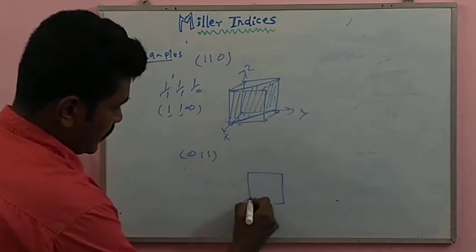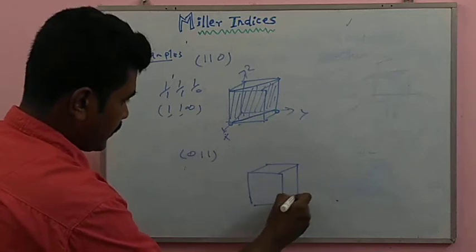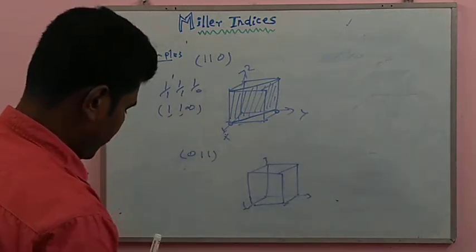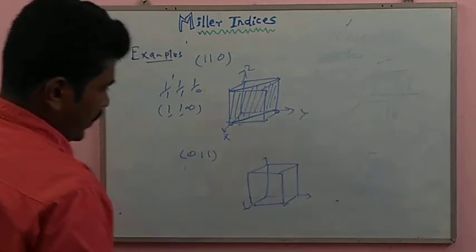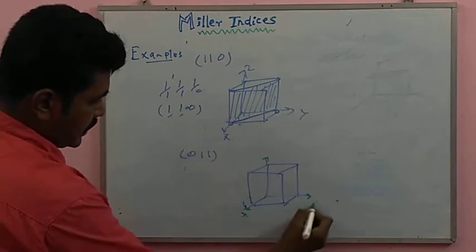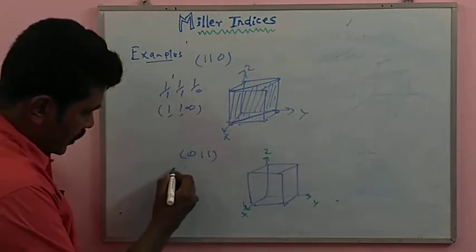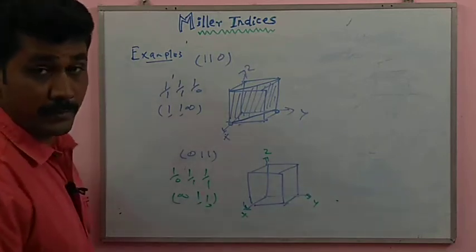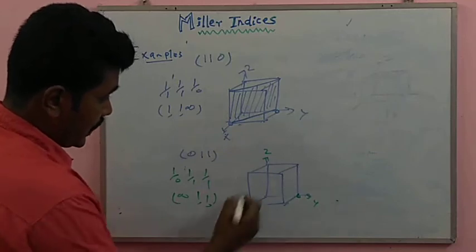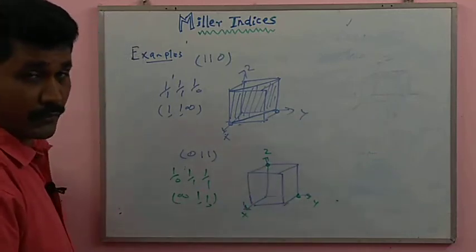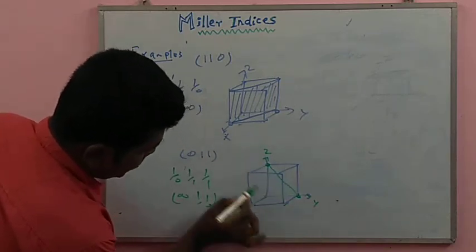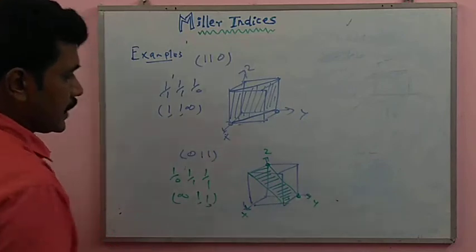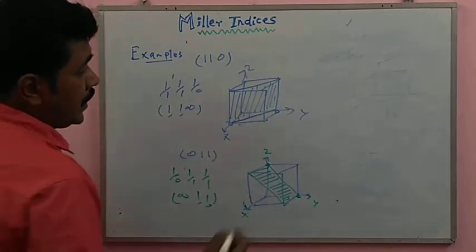Next: the (0 1 1) plane. With x, y, and z axes, the reciprocals are 1/0, 1/1, 1/1, giving infinity, 1, and 1. The y and z axes are at maximum distance of one unit, while x is infinity. Connect these two points and shade the particular area — this is the (0 1 1) plane.